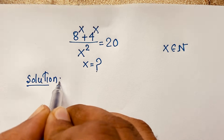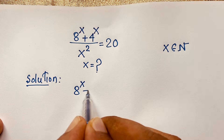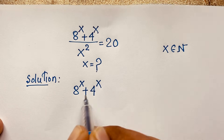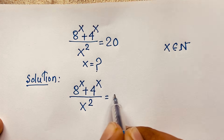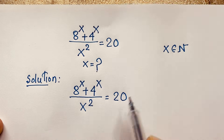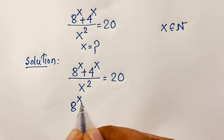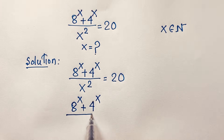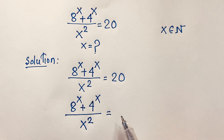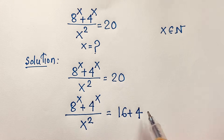Our question is: 8^x plus 4^x over x squared equals 20. At this moment I can observe that 20 equals 16 plus 4, so the right-hand side becomes 16 plus 4.